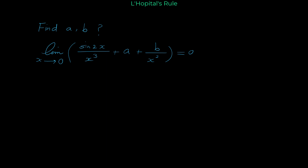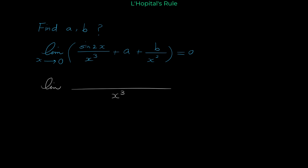The first thing we have to do is find a common denominator between the expressions — sine of 2x over x cubed and a and b over x squared. We do this because we want to have a single fraction so we can use L'Hôpital's rule. The common denominator is x cubed, so the numerator becomes sine of 2x plus a times x cubed plus bx.